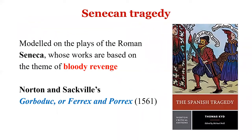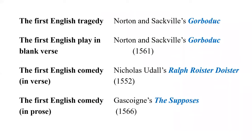S is for Senecan Tragedy — based on the Roman playwright Seneca, involving blood or bloody revenge. Hamlet is a Senecan tragedy. The first Senecan tragedy in English is Norton and Sackville's Gorboduc (also called Ferrex and Porrex), 1561 — also the first English play in blank verse. Thomas Kyd's The Spanish Tragedy is another key Senecan tragedy. The first English comedy in verse is Nicholas Udall's Ralph Roister Doister (1552); the first English comedy in prose is George Gascoigne's The Supposes.